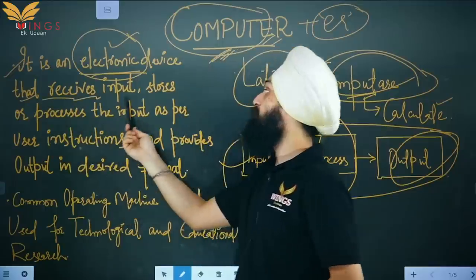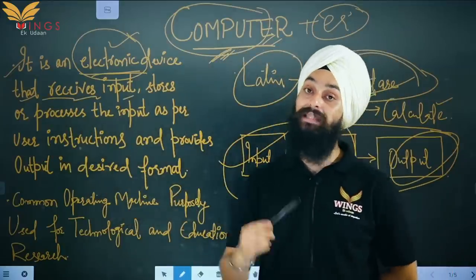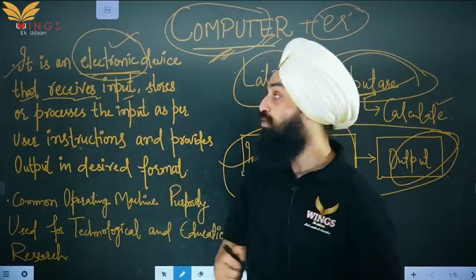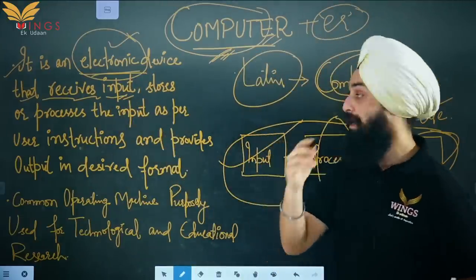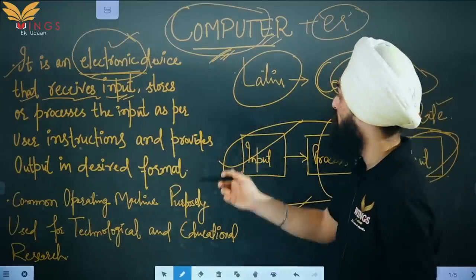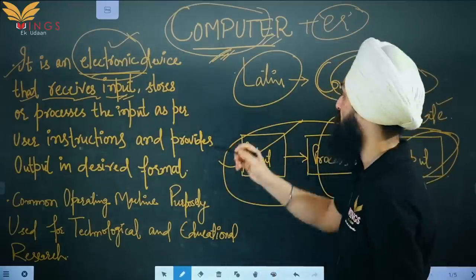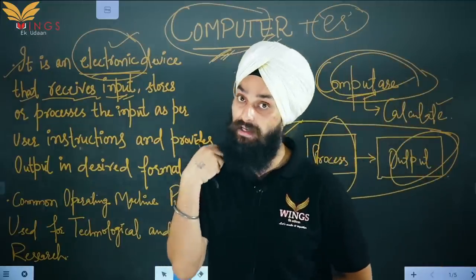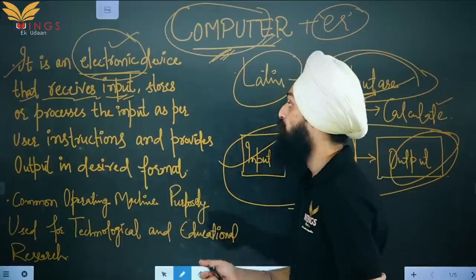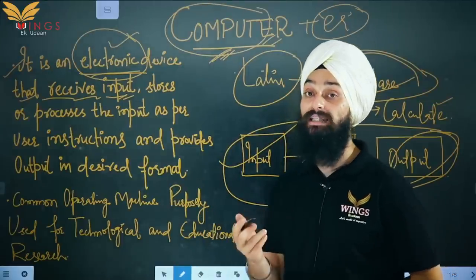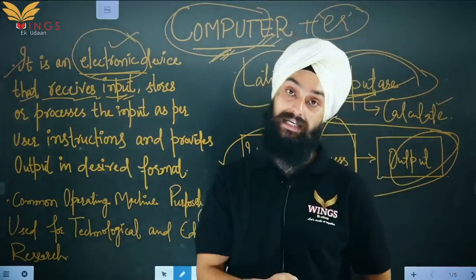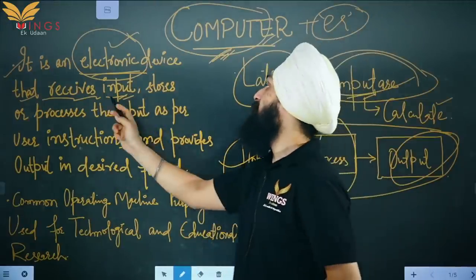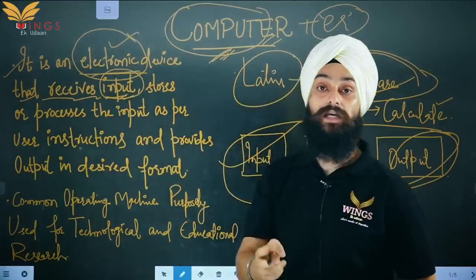When you are a user and you interact with a computer, you provide input. For example, if you want to make a call on your phone, you dial the number or go to your contacts — that act of entering information is your input.